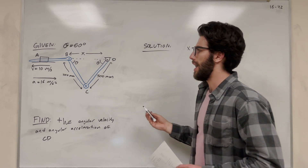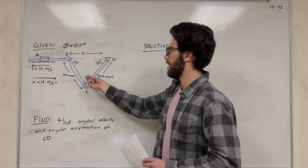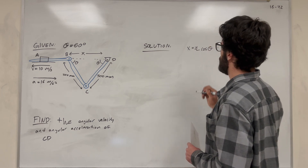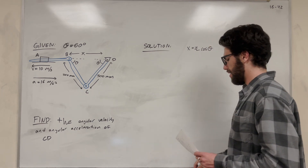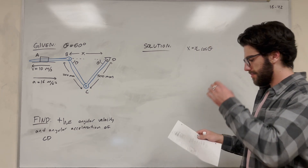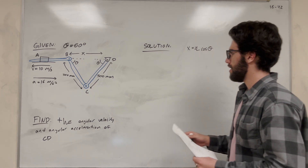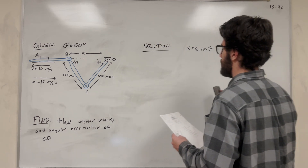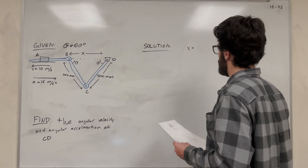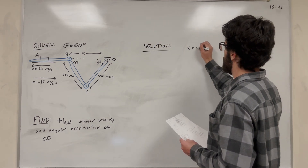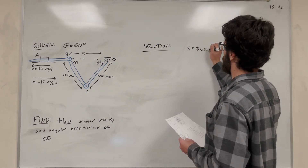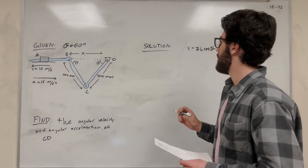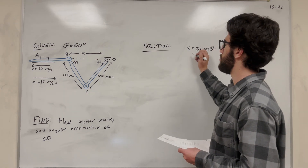But this only bridges half the gap, so we need to put a two out front: X equals 2L cosine of theta. Let's label this the distance of BD.